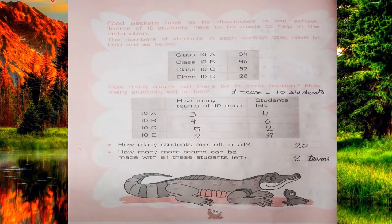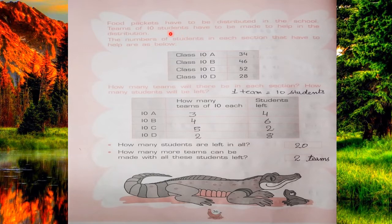Now the next exercise is a game: food packets have to be distributed in the school. Teams of 10 students have to be made to help in the distribution. The number of students in each section that have to help are: Class 10A has 24 students, Class 10B has 46 students, Class 10C has 52 students, and Class 10D has 28 students.